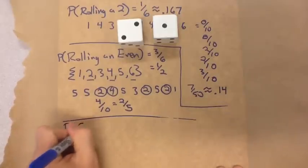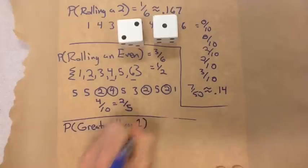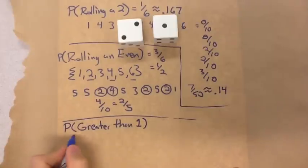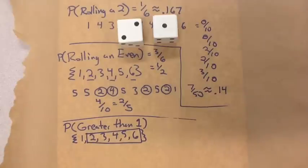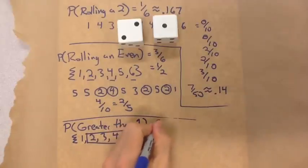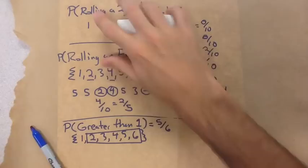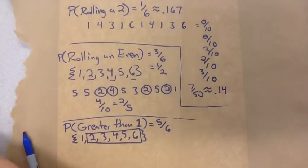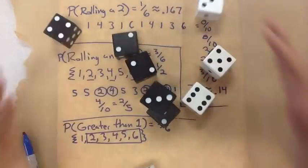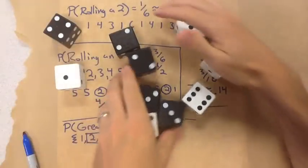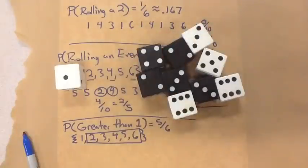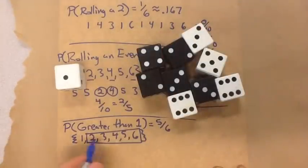What if I did the probability of rolling greater than one? Looking at the sample space, greater than one would cover all of those values, so there are actually five different options — five out of six. We're going to roll all ten and find our greater-than-one results. I've got a one here, and the rest work, so this was nine out of ten.